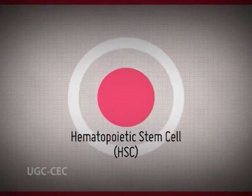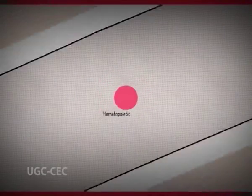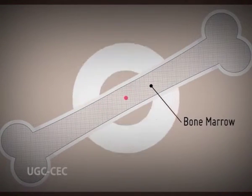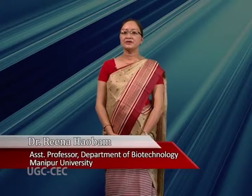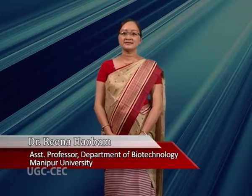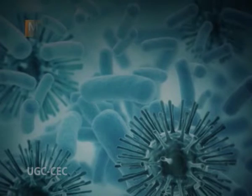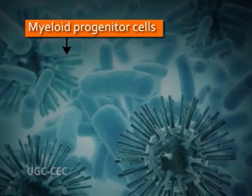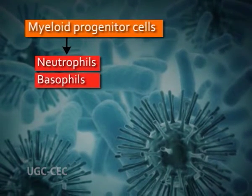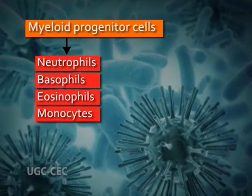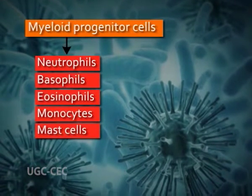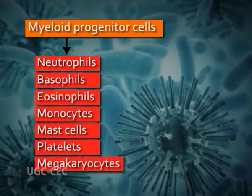All cells of the blood arise from multipotent hematopoietic stem cells of the bone marrow. Hematopoietic stem cells differentiate into either a lymphoid or a myeloid progenitor cell. Lymphoid progenitor cells give rise to lymphoid cells and some dendritic cells. Myeloid progenitor cells differentiate into neutrophils, basophils, eosinophils, monocytes, mast cells, platelets, and megakaryocytes.